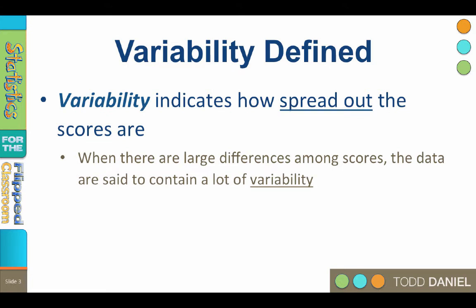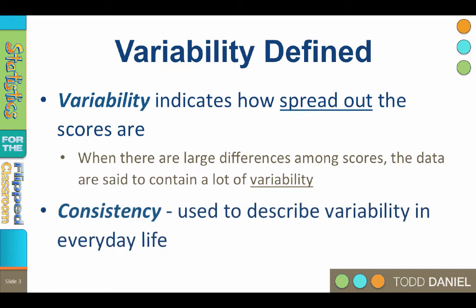The opposite of variability is consistency. Consistency is the term that we use to describe variability in everyday life. If people, events, and experiences are very similar, we call them consistent. And as human beings, we like consistency because we like to know what to expect. Consistency minimizes uncertainty.